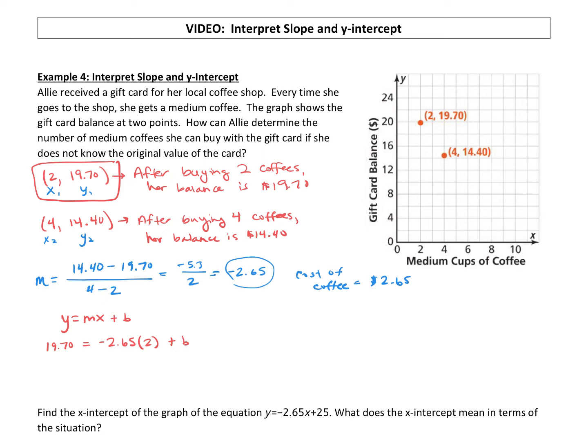-2.65 times 2. We have 19.70 equals -5.3 plus b. To solve for b, let's add 5.3 to both sides. Our b value, which is our y-intercept, is 25.